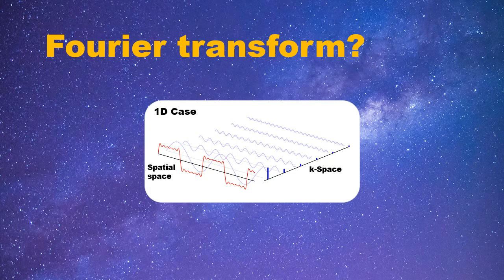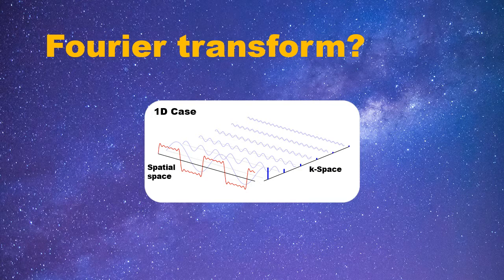I mentioned that Fourier transform is a bridge connecting spatial space and spatial frequency space. And the signal can be converted back and forth between these two spaces using Fourier transform. Here is a 1D illustration for Fourier transform. The signal wave in red on the left is the square wave in spatial space. By taking Fourier transform, the signal wave is decomposed into several trigonometric components with different spatial frequencies. And then, these trigonometric components are assigned to k-space according to their spatial frequencies. That's how we get its k-space.